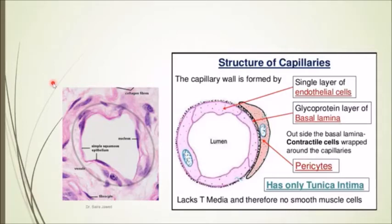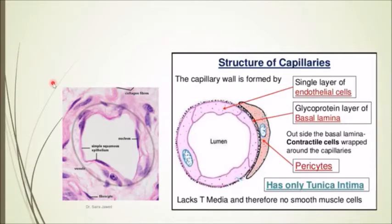In the microscopy exam, you need to identify the slide and give an answer supported by three identification points. For every histological component you study — the histology of any organ or tissue — you must remember three to five identification points that tell you how to identify that slide under the microscope.